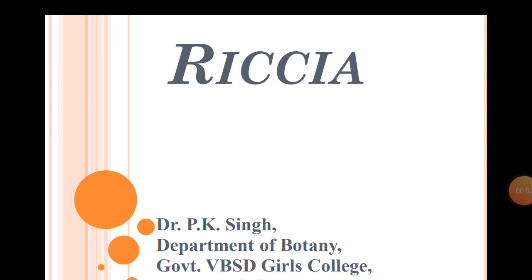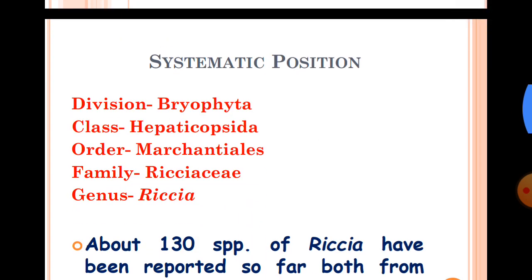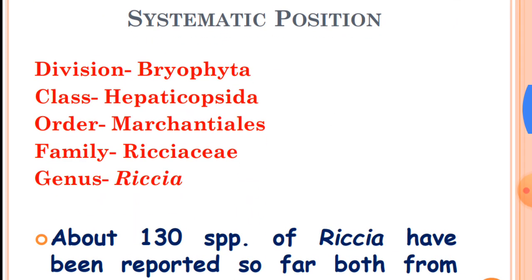Today we are going to discuss about Riccia. The systematic position of Riccia: it belongs to division Bryophyta, class Hepaticopsida, order Marchantiales, family Ricciaceae, genus Riccia.